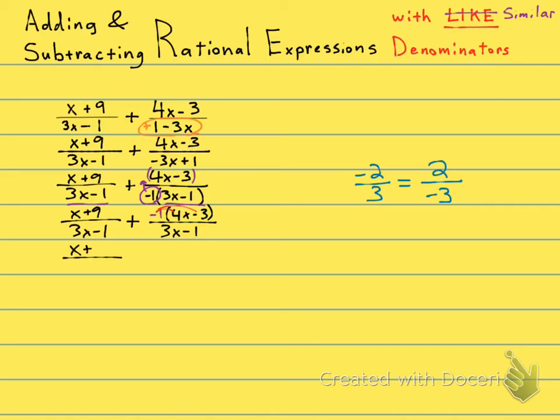All right, so my fraction here is x plus 9 over 3x minus 1 plus... Now, this was a 4x, but now it's negative 1 times 4x, so I'm going to have minus 4x. This was a minus 3, but now it's negative 1 times a minus 3. Negative times a minus or a negative times a negative is a plus.